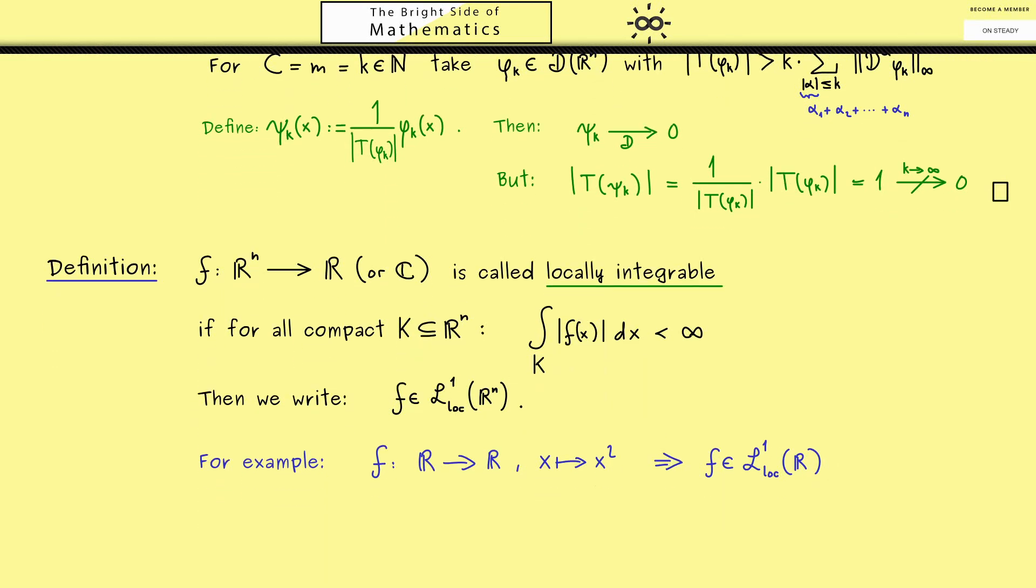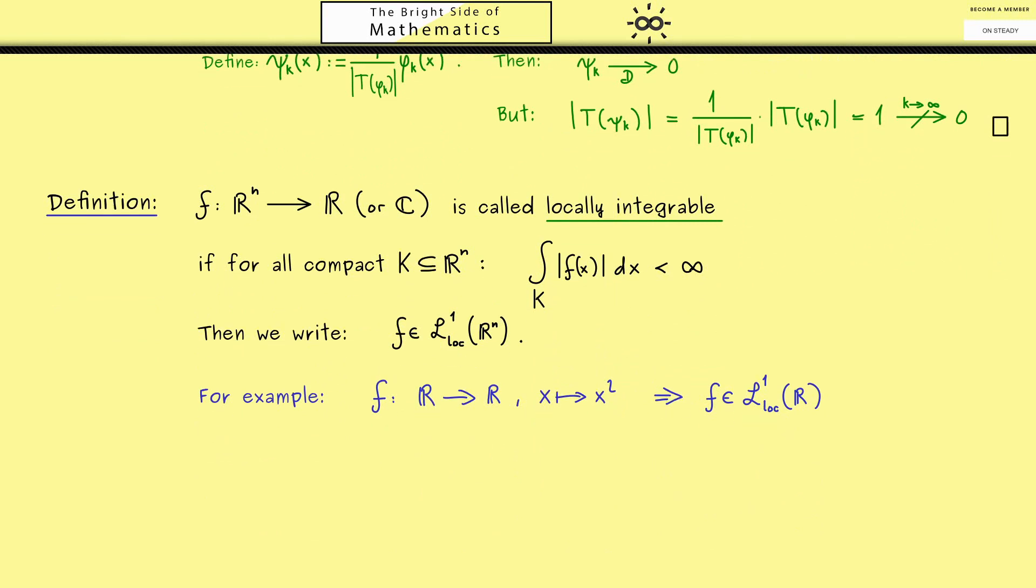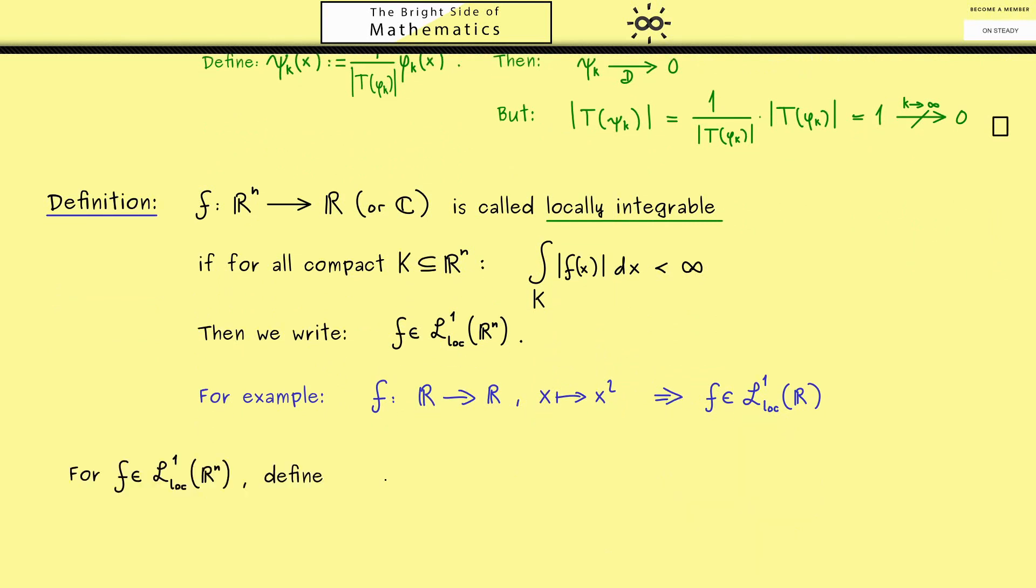Now the nice thing we want to do now with such a function is to define a distribution. For such a function f, I want to use the notation T_f for the corresponding distribution. And it is defined for a test function phi, and you might already know this because we did it for continuous functions in the last video, by the integral f times phi.